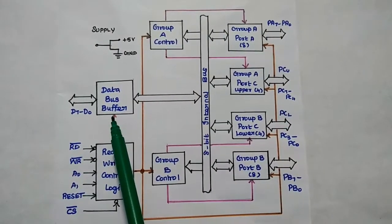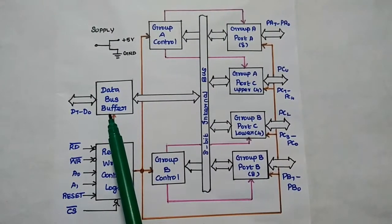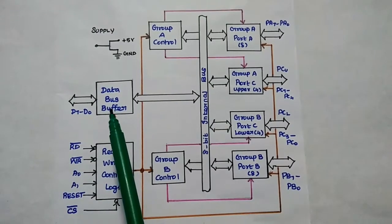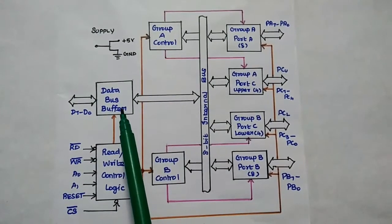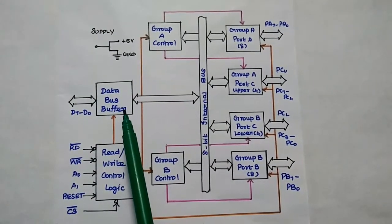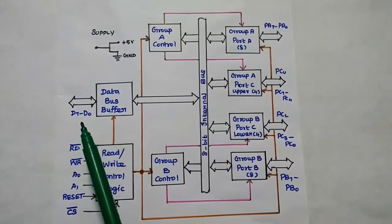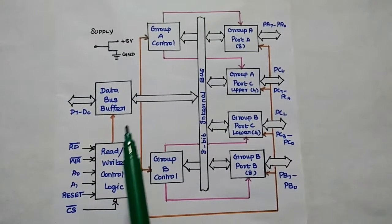The Data Bus Buffer is an 8-bit bidirectional buffer which is used to transfer the data, control word, and status information between the processor and the 8255A.